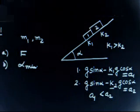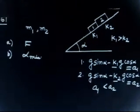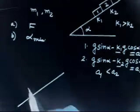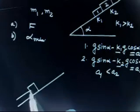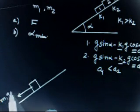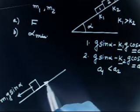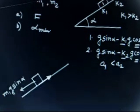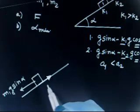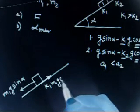Now let us draw the free body diagram. For block 1, the forces acting are M1 g sin(alpha) along the incline downward, and a normal reaction M1 g cos(alpha) perpendicular to the incline. The friction force acting up the incline is k1 times M1 g cos(alpha).